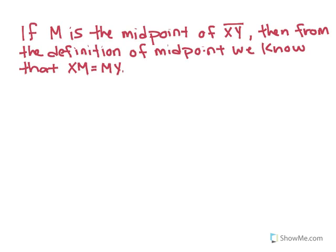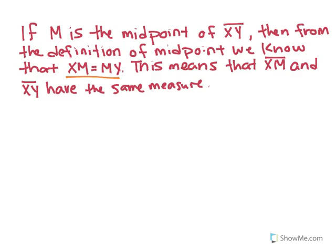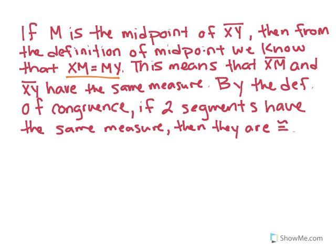The trick is to look at your last piece of information. We said that XM is equal to MY — what does that mean in terms of congruency and their lengths? It means that segment XM and segment MY have the same measure. To get to the end, we say that by the definition of congruence, if two segments have the same measure, then they are congruent. This is how we get from the very beginning to the very end. Even though it may seem obvious, you have to go through this process of reasoning.